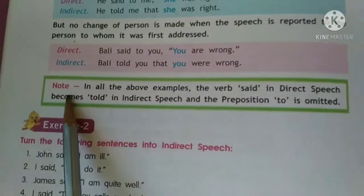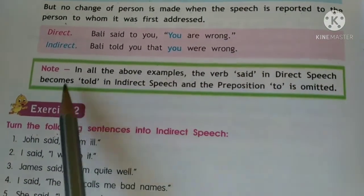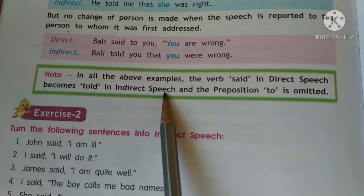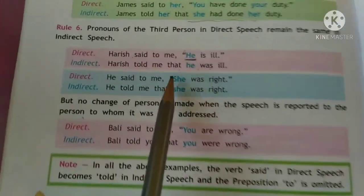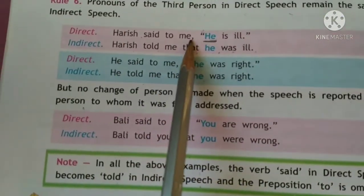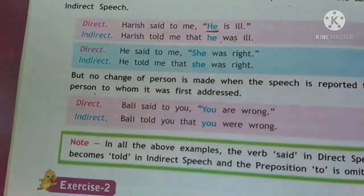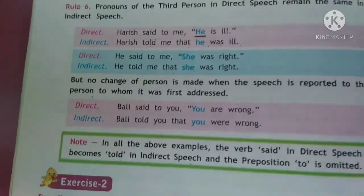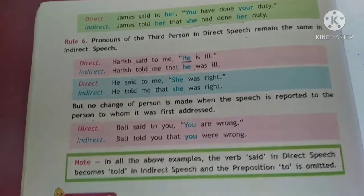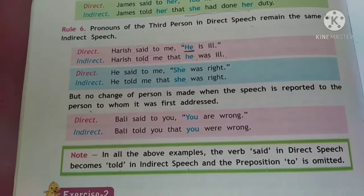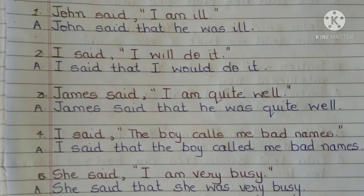In all the above examples, the verb 'said' in the direct speech becomes 'told' in the indirect, and the preposition 'to' is omitted. When two are talking, we change 'said' into 'told' and do not write 'to' in the indirect. I hope you have understood Rules 4, 5 and 6. Now let us begin with Exercise 2.